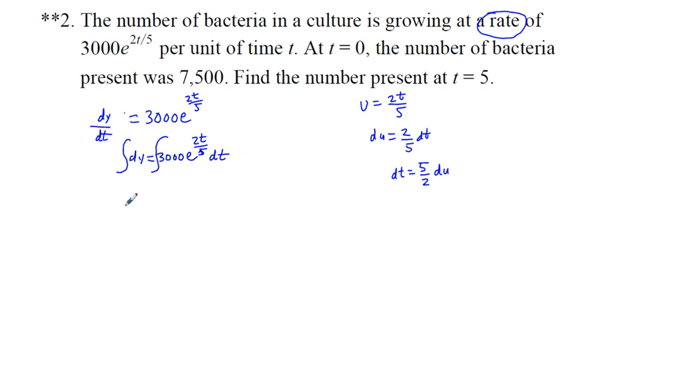And so that's what we're going to have to put in here. So if we go ahead and use dt and integrate, on the left side, the integral of dy is going to be y. And on the right side, we're going to have 3,000. We're going to have e to the power of 2t over 5. And then we're going to multiply that by 5 halves. Plus, we're going to have our constant of integration, c.